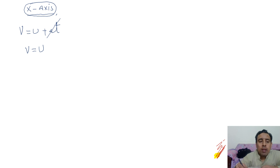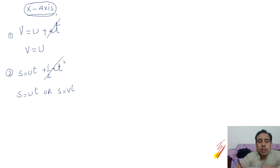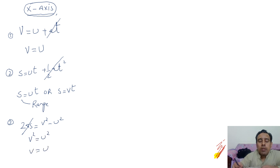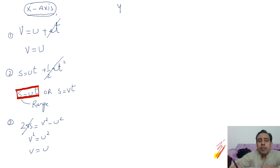For the second equation, s = ut + ½at². Since acceleration is zero, we are left with s = ut, which can also be written as s = vt because u and v are the same. This s is called the range of the projectile. For the third equation, v² = u² + 2as — with acceleration zero, v² = u², confirming v = u. So the only relation required for horizontal motion is s = ut.